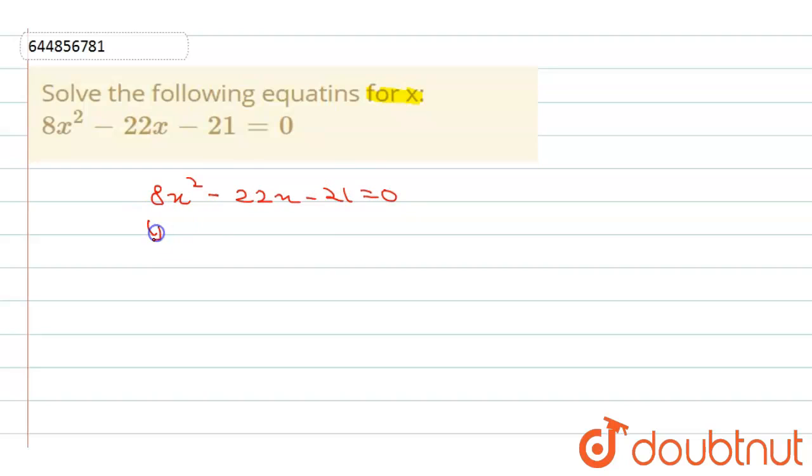So from here by splitting method we can say that this is 8x square minus 28x plus 6x minus 21 equal to 0. Basically we have to split this minus 22.